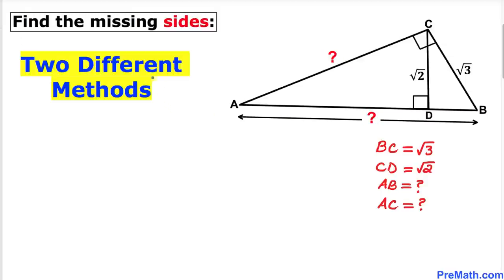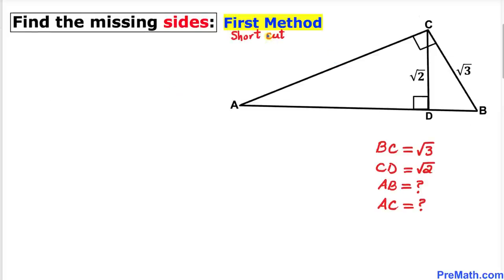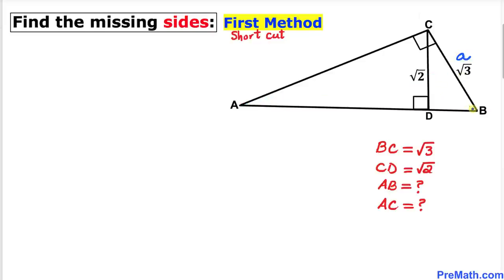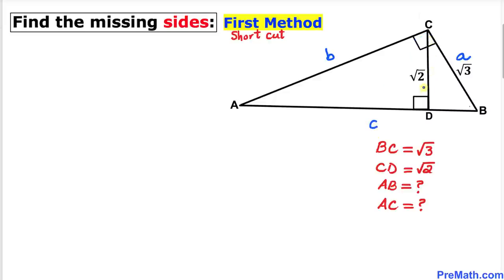In this video lesson I will share with you two different methods, and here's our very first method — the shortcut method. Let's go ahead and label these sides. Let's focus on vertex A — the opposite side of vertex A I am going to call lowercase a. Likewise, opposite to vertex B I'll call lowercase b, opposite to vertex C I'll call lowercase c, and finally this perpendicular CD I am going to call height h.